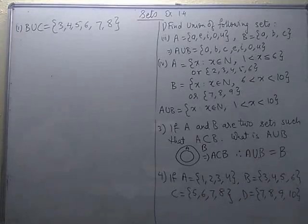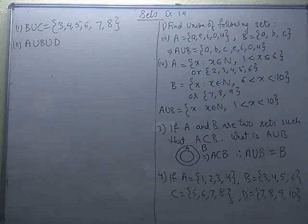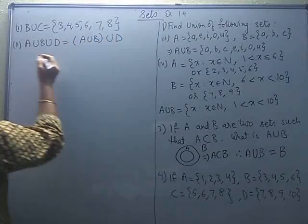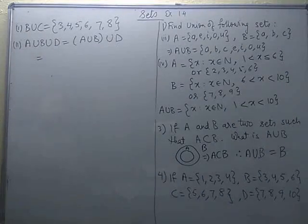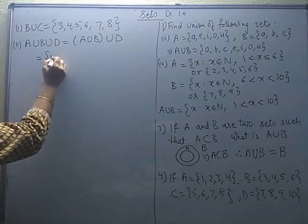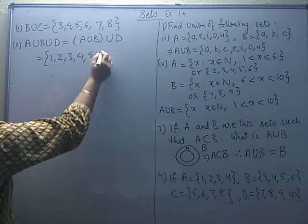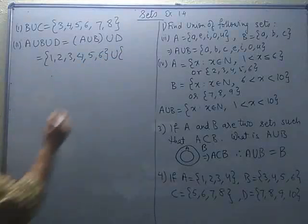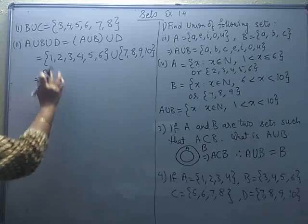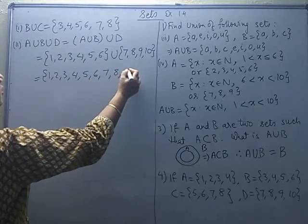Suppose we take 3 sets: A union B union D. You can solve it by taking two sets at a time — write A union B first, then take its union with D. A union B contains all elements of A and B, giving 1, 2, 3, 4, and then 5, 6. Now take its union with set D which has elements 7, 8, 9, 10. The union of all these gives us the natural numbers from 1 to 10.